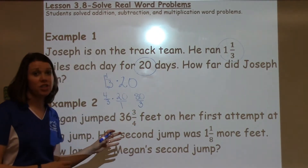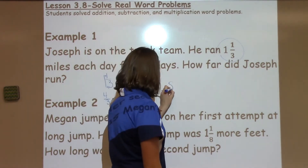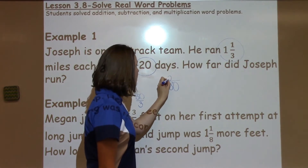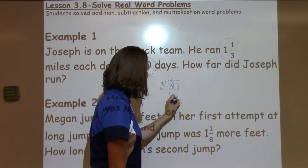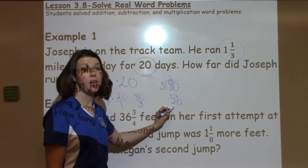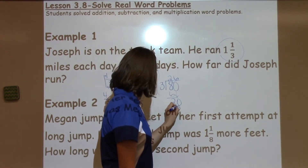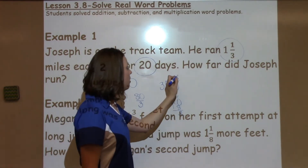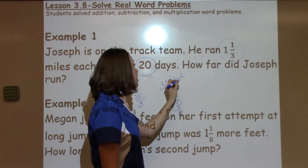Now I have an improper fraction, which students know, but need to go ahead and divide. So when I take 80 divided by 3, that will give me my final answer. 3 can go into 8, 2 times. 2 times 3 is 6. When I subtract, I get 2 — bring down my 0. Now I need to figure out how many times 3 can go into 20. I know it can go in there 6 times. 6 times 3 is 18, with 2 left over. That 2 becomes my remainder, which goes to the numerator of my fraction. My divisor is the denominator of my fraction.